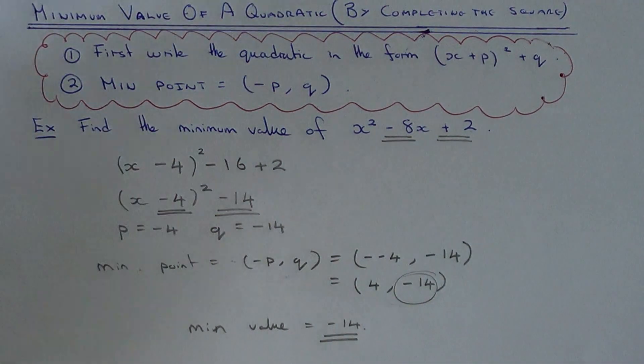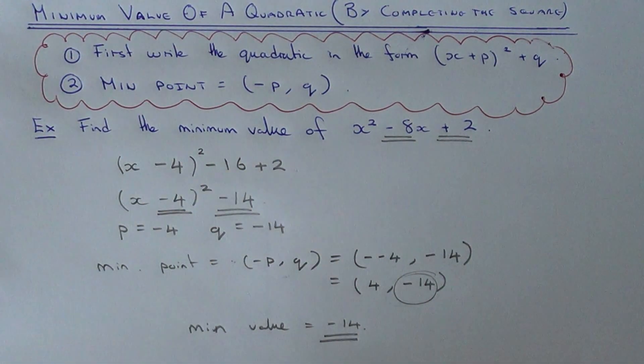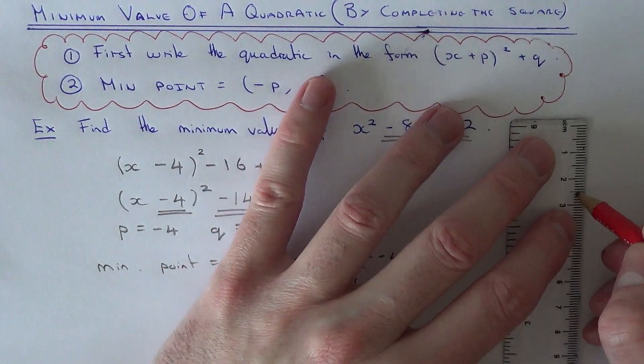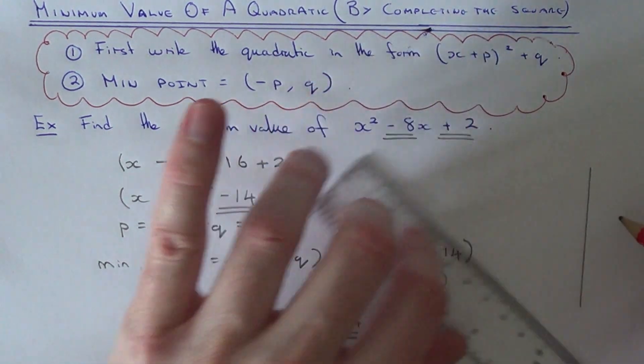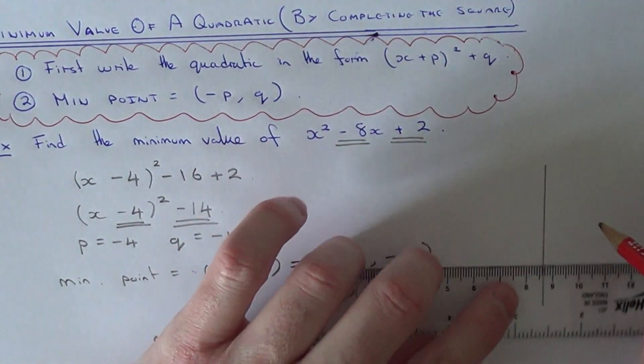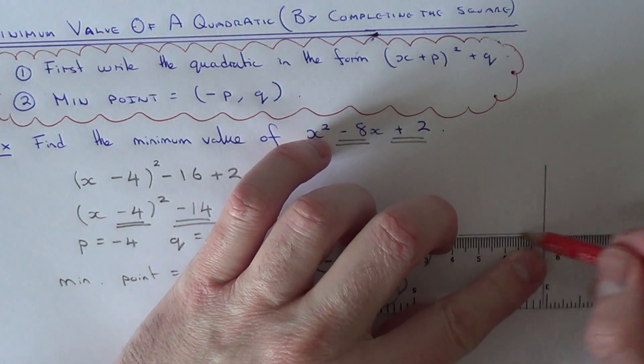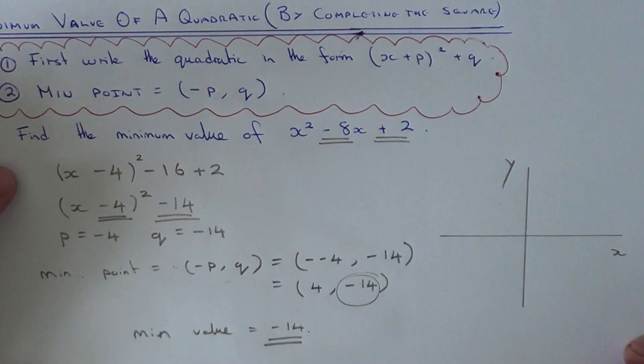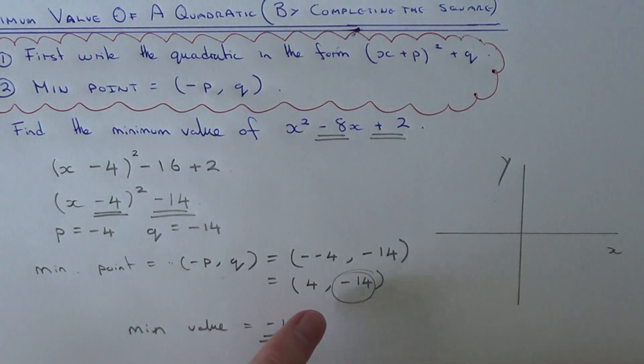Let me just show you what this looks like on a coordinate grid. So the minimum point on our quadratic was at 4 minus 14. So this is somewhere down here.